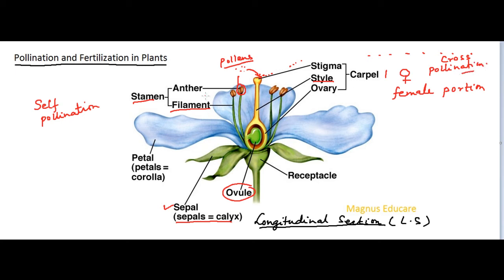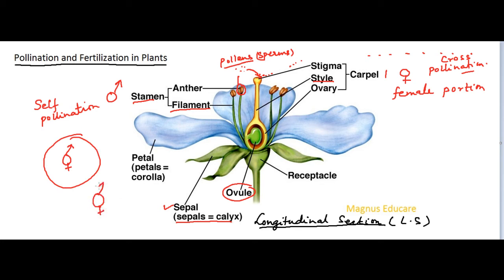Pollens come from the male parts. When pollen grains arrive, they contain cells and nuclei, also known as sperms in some cases. In biology, male is denoted in a specific way. This flower has both male and female portions, so it is denoted as a bisexual flower in biology. The petals of the flower are also known as the corolla.